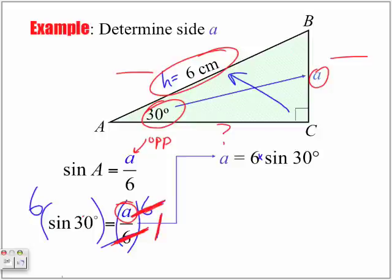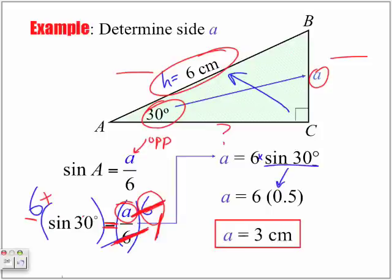But remember, what I do in math on one side of the equal sign, I must do to the other. So, the function was I multiplied by 6 this side, which means I'm going to multiply by 6 this side. And our value for A is equal to 6 multiplied by 0.5, which is really our sine 30 is equivalent to 0.5. And our value of A is equal to 3 centimeters.